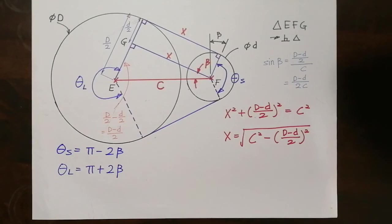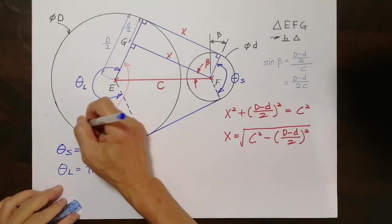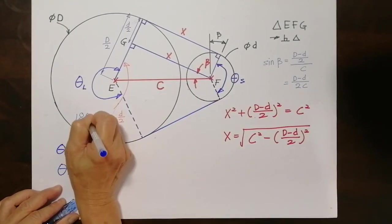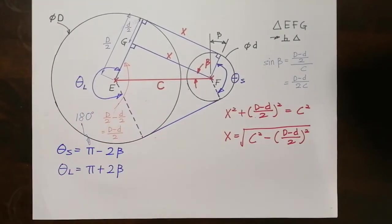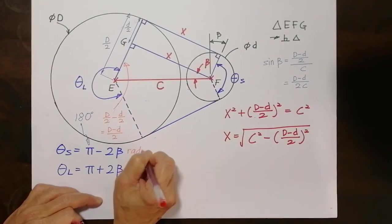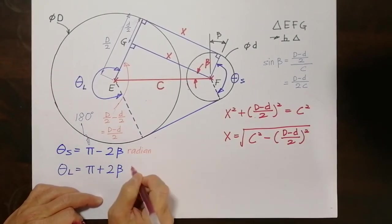Just in case you wonder why I write π, π actually represents 180 degrees. So basically, I'm saying 180 degrees minus 2β. And it has to be in radians. So I better put a note here. So the angle has to be in radians. This is also in radians.